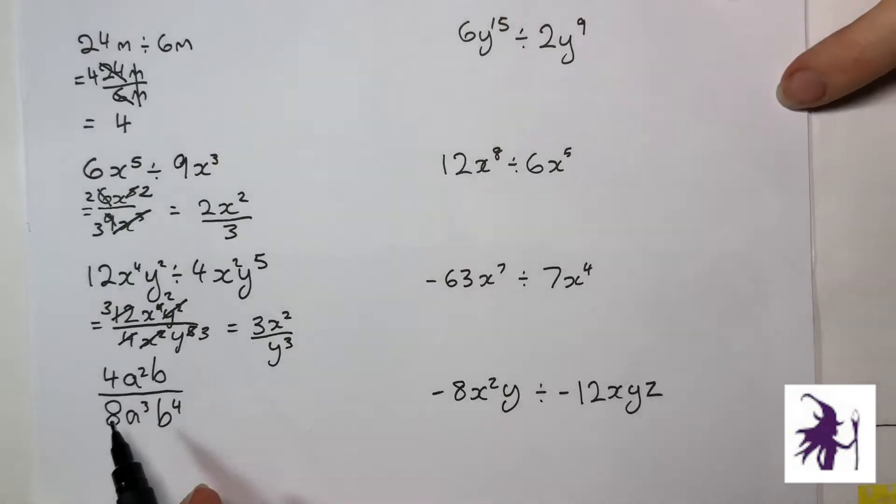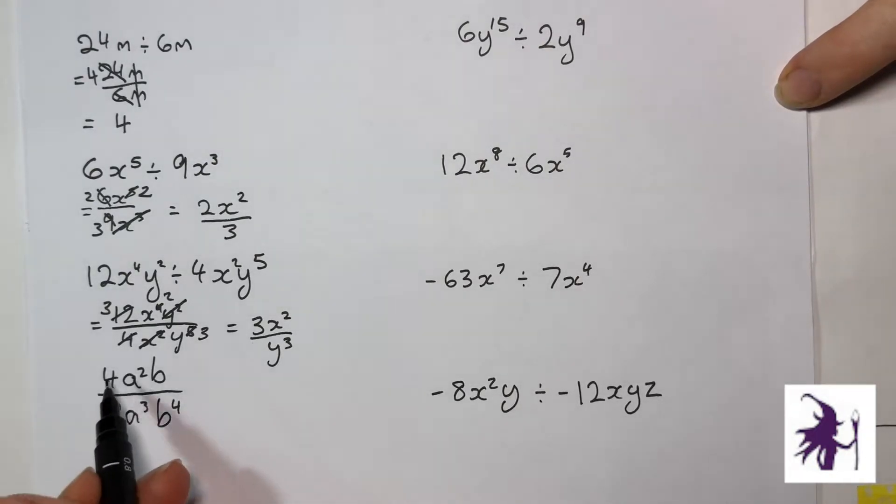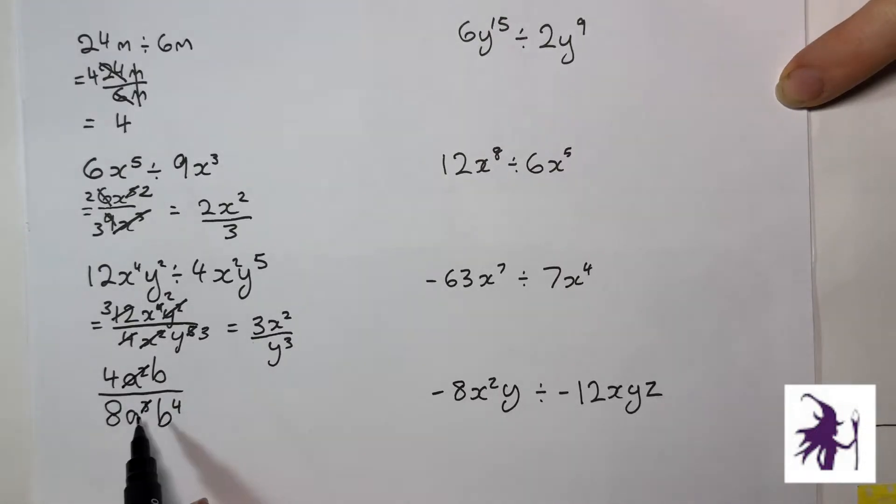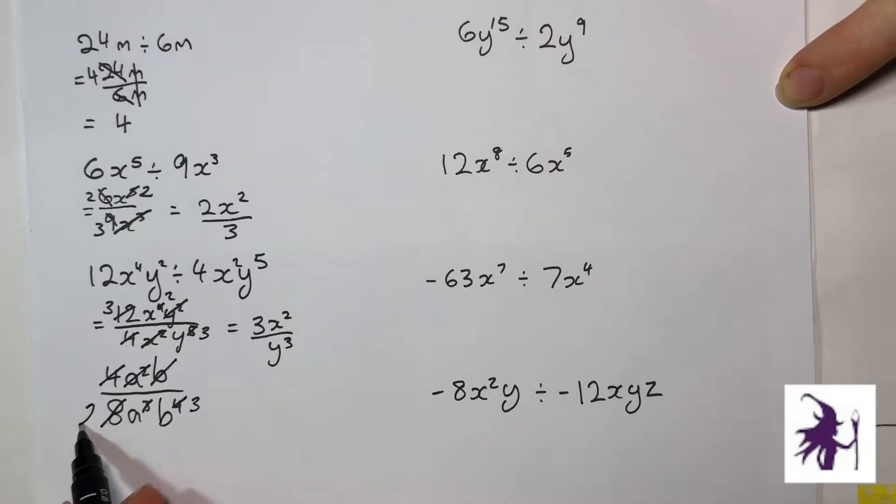This one's already in fraction form, so I'm ready to go. I can just start spearing straight up. I've got A squared. That's smaller, so I lose the cubed. I'm left with the A. I'm not going to write a 1 in. There's a B here and there's 4 of them here, so lose that 1 and left 3 behind. Now, I cancel the 4 here with the 8, because 4 goes into 8 twice.